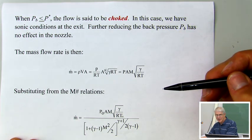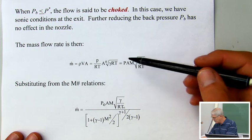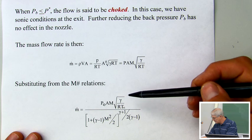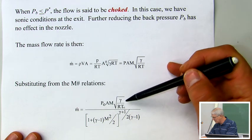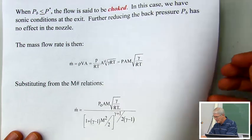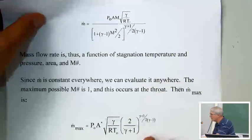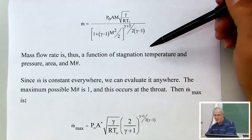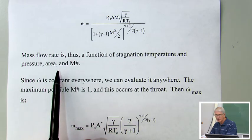We're going to write this in terms of the stagnation conditions. Using our Mach number relations and substituting for pressure and temperature, we end up with the mass flow rate equal to P₀ times A times M times the square root of gamma over RT₀, plus an additional term. So we've now written the mass flow rate as a function of stagnation temperature, stagnation pressure, area, and Mach number — everything depends on the stagnation conditions.